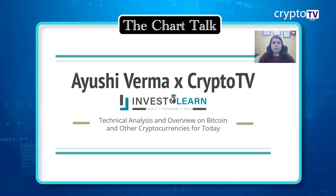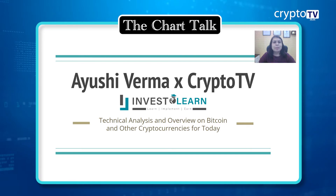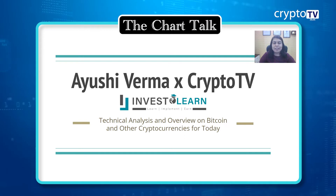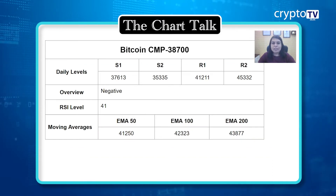Hey guys, welcome back to Crypto TV. This is Ayoshi Verma from Invest to Learn Academy. Today I'm here to present the technical analysis outlook for the two major cryptocurrencies, Bitcoin and Ethereum. We'll be looking at the daily chart, talking about a few technical indicators, and trying to understand what the charts are telling us technically. Let's quickly start with Bitcoin first.